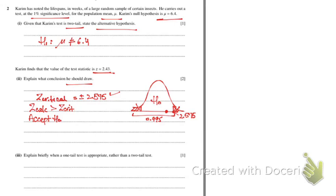A one-tailed test is appropriate when you are testing whether mu has either increased or decreased — but only one direction, not both. A two-tailed test is used when you know there is a change but don't know the direction — the change could be greater than or less than the original mu.